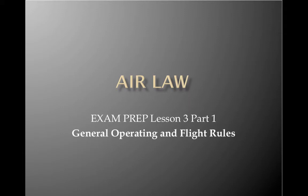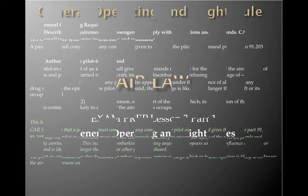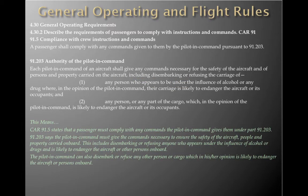So let's get into general operating and flight rules — another wonderfully boring but critically important topic. The CAA expects us to truly understand general operating requirements, and one thing we'll be tested on is the ability to describe the requirements for passengers to comply with instructions and commands under CAR 91. Section 91.5 covers compliance with crew instructions and commands.